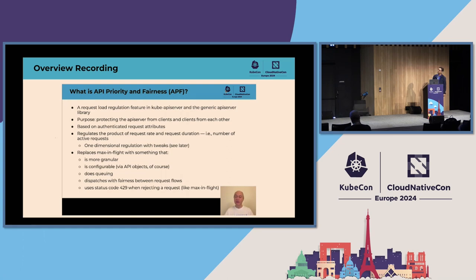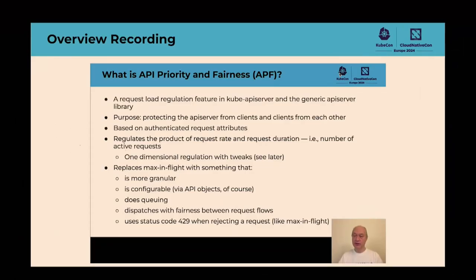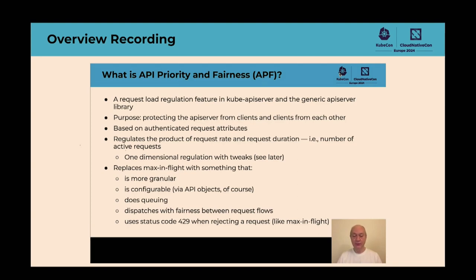APF takes into account both the request rate and the time it takes to serve each request, because the product of these two is on average the number of concurrent requests. This is one-dimensional regulation — an approximate technique, with a few tweaks to make it better. This feature replaces the max-in-flight filter, which is simpler: it classifies each request into just two categories — mutating or read-only. APF is more granular, configurable, introduces queuing and fairness between clients, and rejects excess requests using HTTP status code 429.